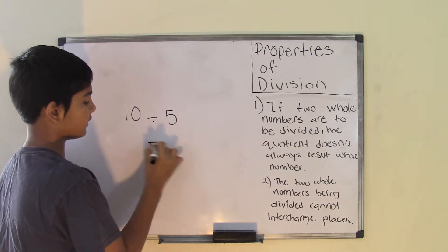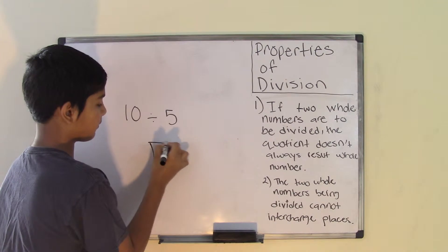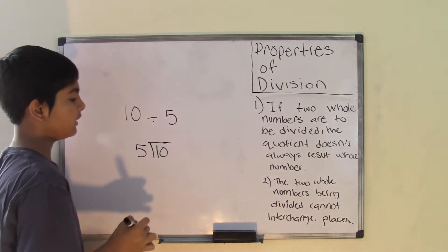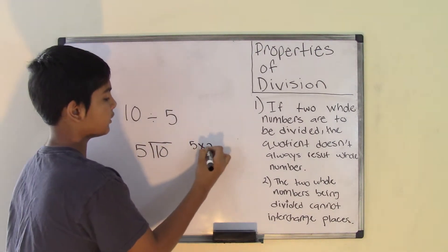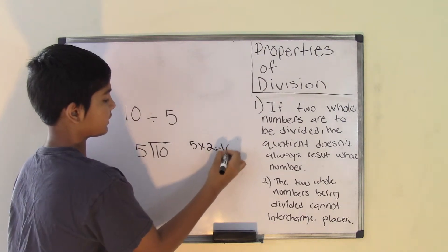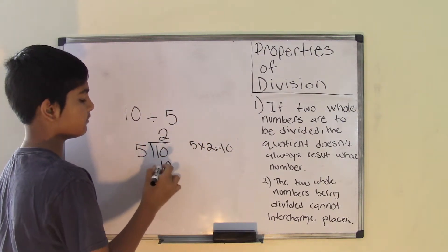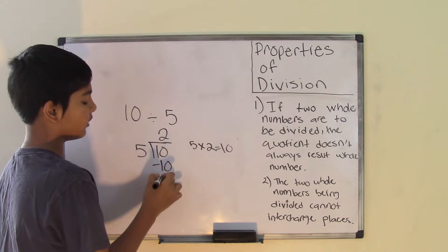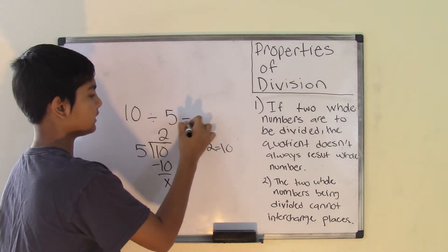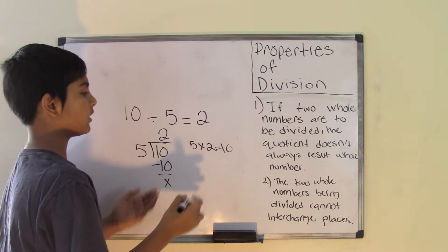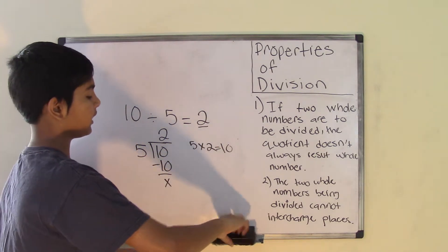The number 10 is the dividend and the number 5 is the divisor. We know that 5 times 2 gives us 10, so 2 is going to be our quotient and 10 is our answer. We subtract, and 10 goes into 10 evenly. So 2 is our quotient, and the number 2 is a whole number.